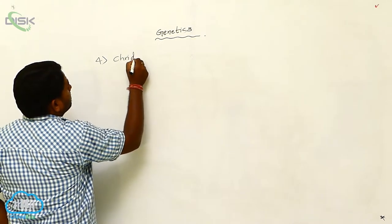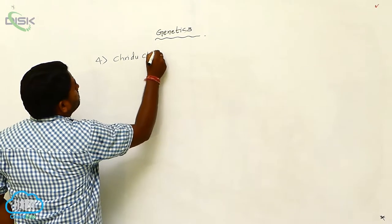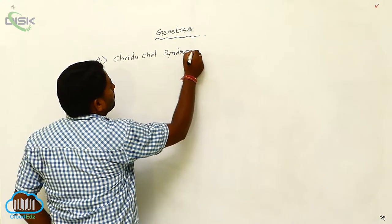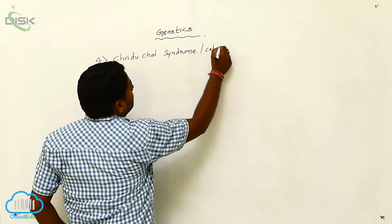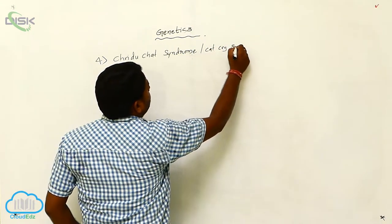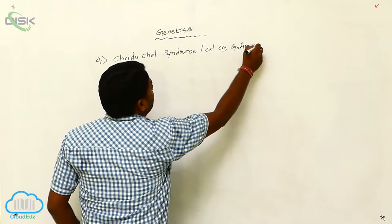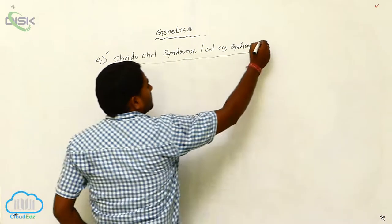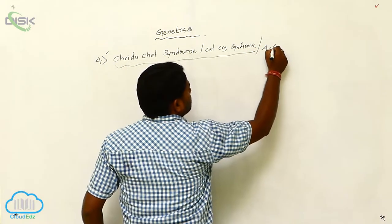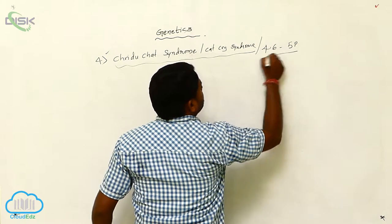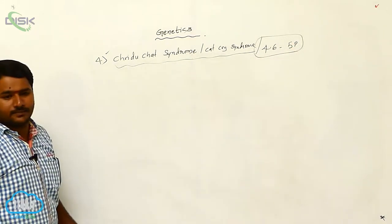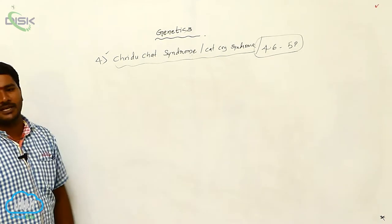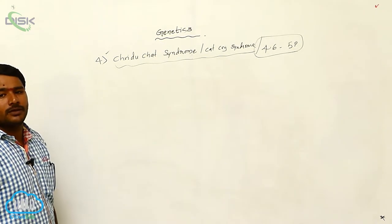The fourth condition is Cri-du-chat syndrome, also called cat cry syndrome. The total number of chromosomes is 46, but the short arm of the fifth chromosome is partially deleted.